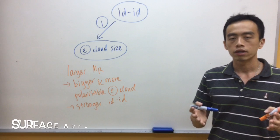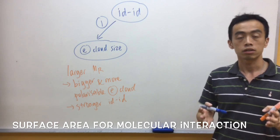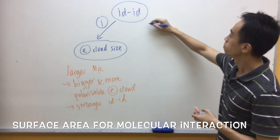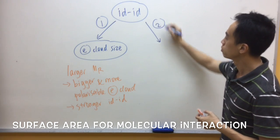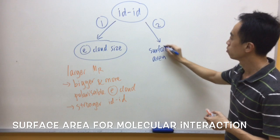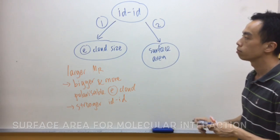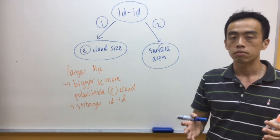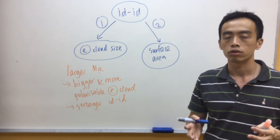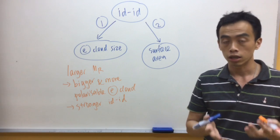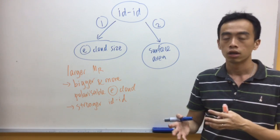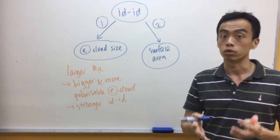The second factor affecting ID-ID interaction is the surface area for molecular interaction. Surface area is determined by the shape of your molecule. If in general the molecule is more spherical, then the surface area for molecular interaction between molecules will be smaller, and therefore the ID-ID interaction will be weaker.